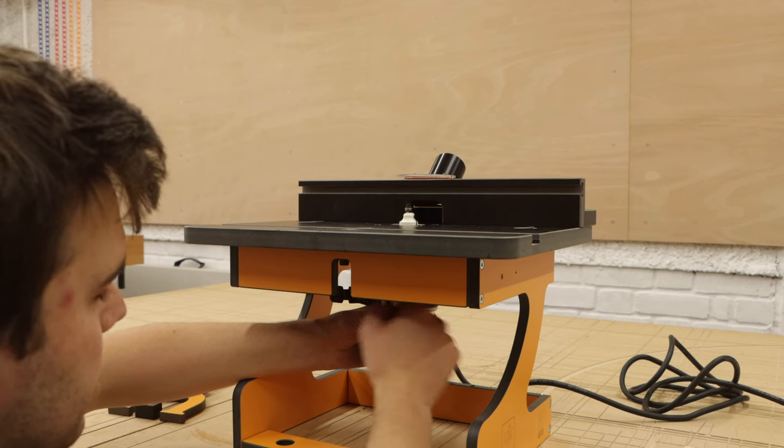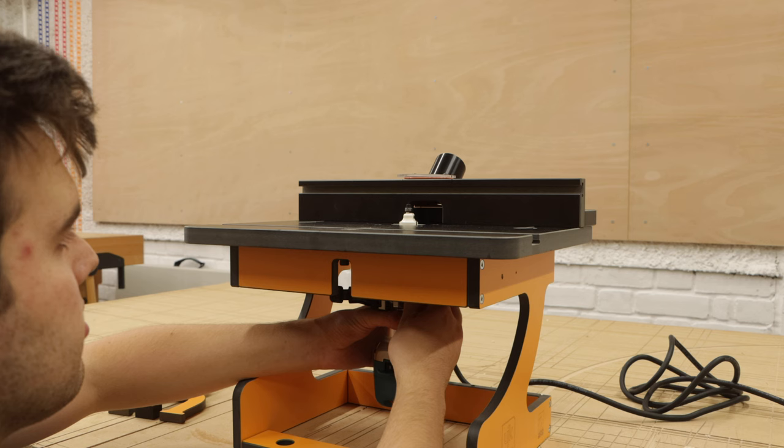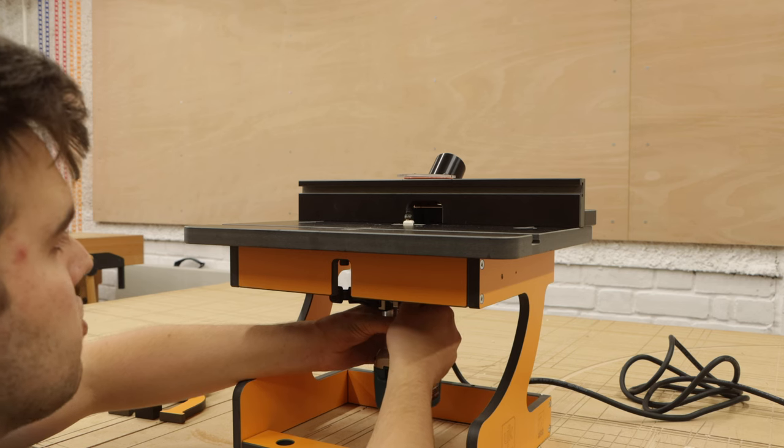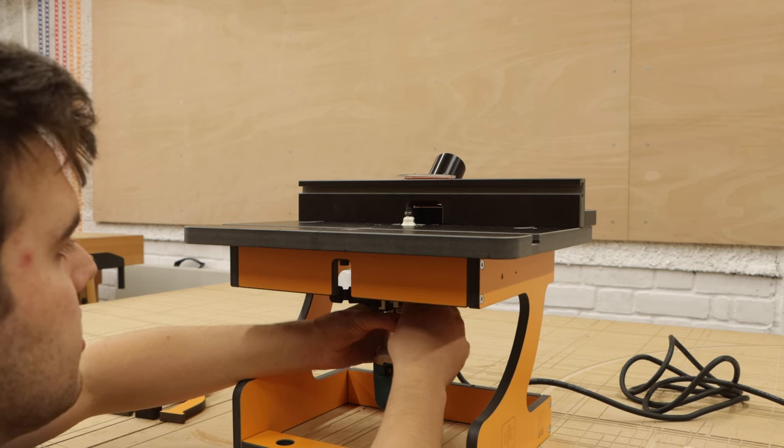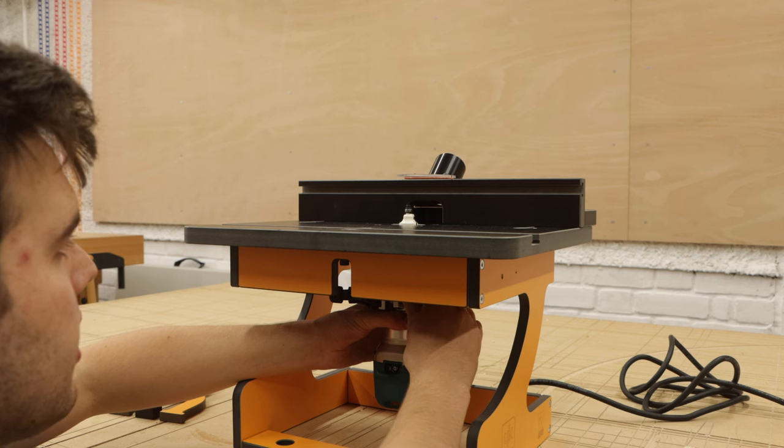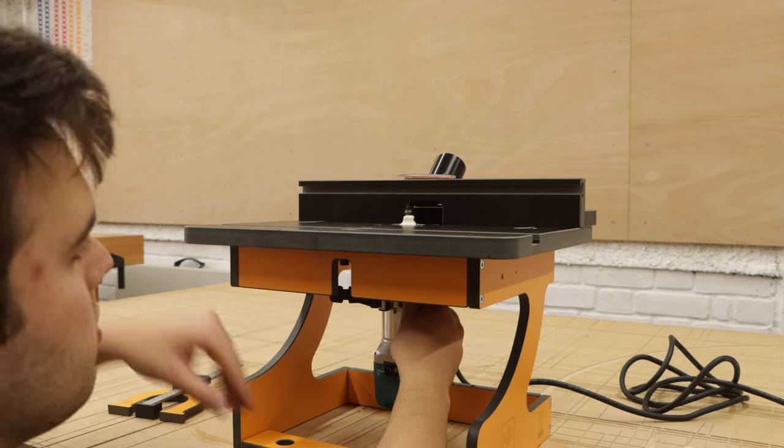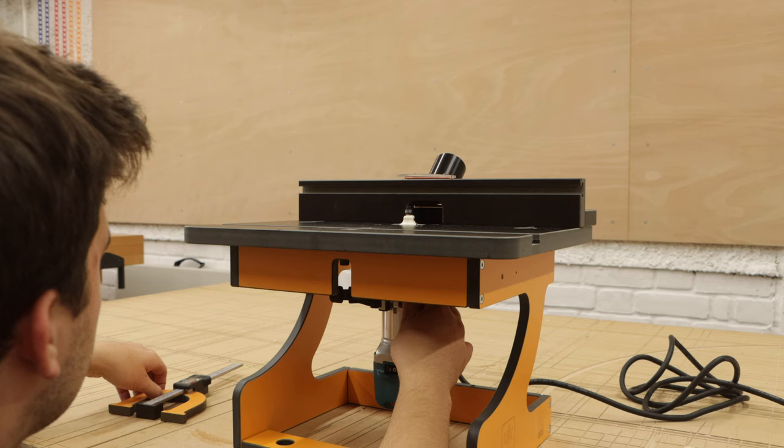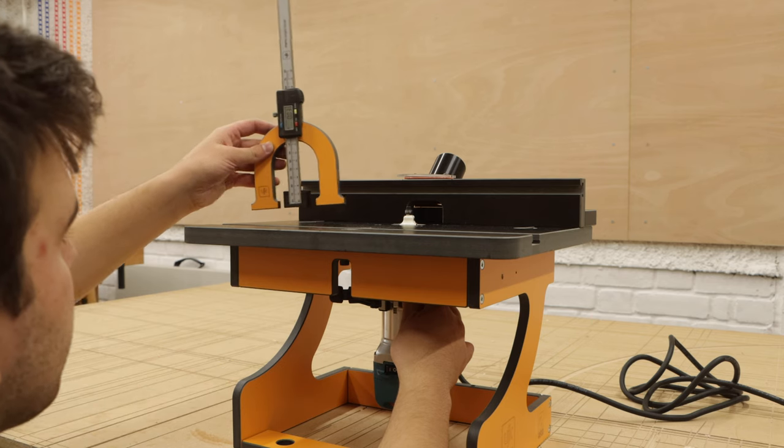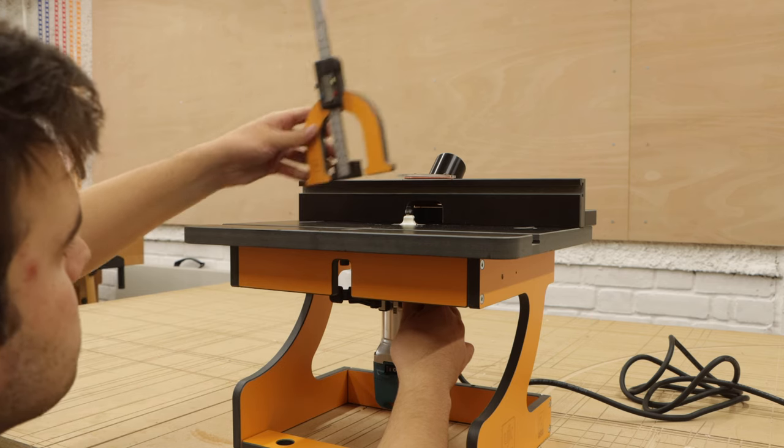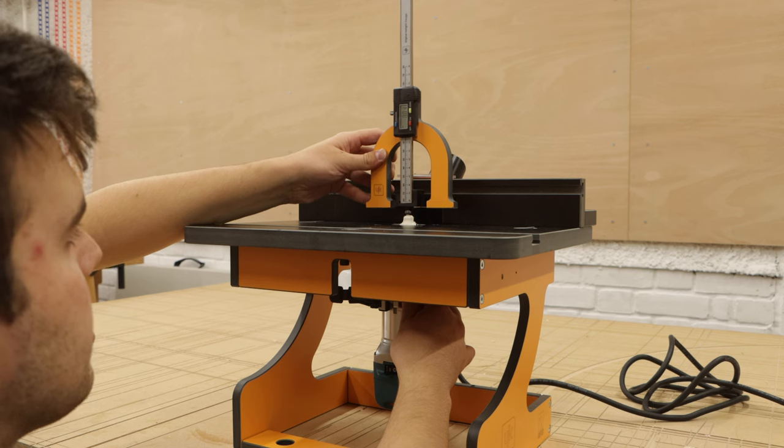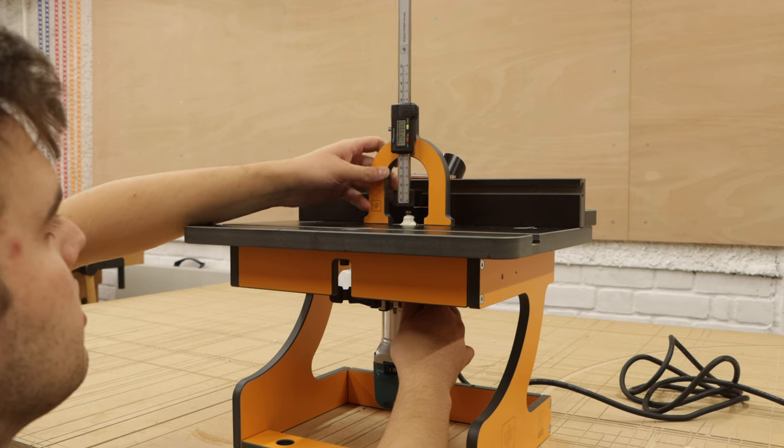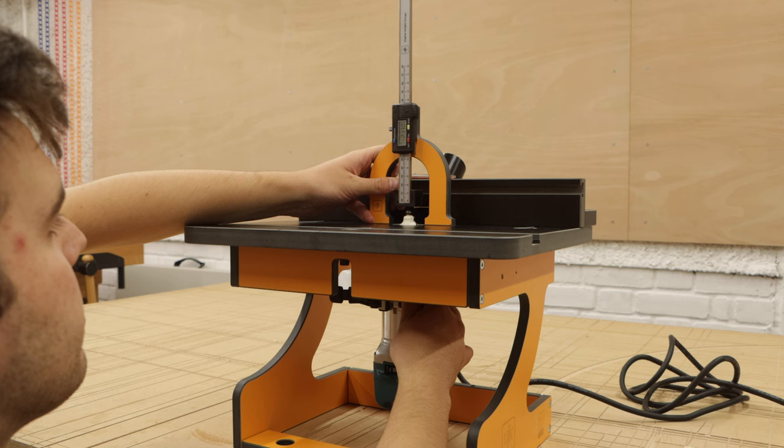So to set the height of the router bit you adjust it from underneath. My trim router has a little knob I can turn so I can dial it in very accurately. You can also use a ruler to adjust the height or you can get the UJK digital height gauge. I place that on top of the router bit and then I can get a very accurate reading.